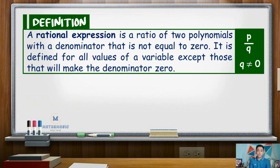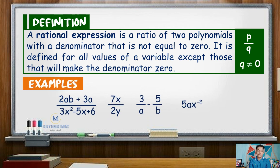The following are examples of rational expressions: 2AB plus 3A all over 3X squared minus 5X plus 6; 7X over 2Y; 3 over A minus 5 over B; 5AX raised to negative 2; and others.